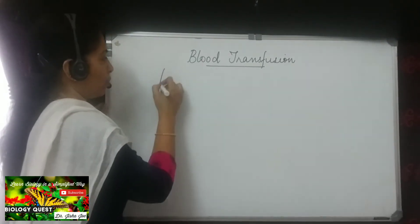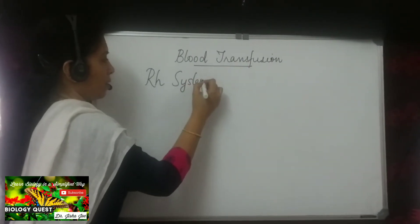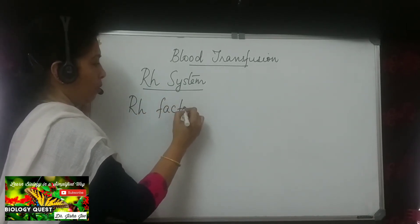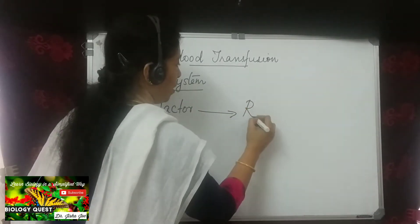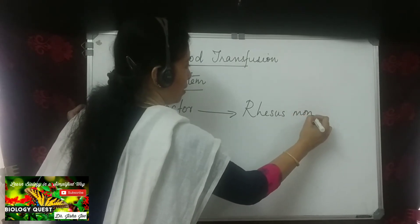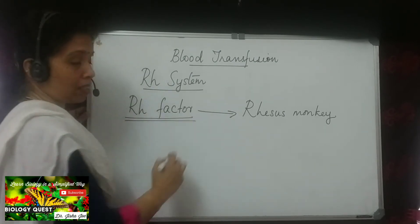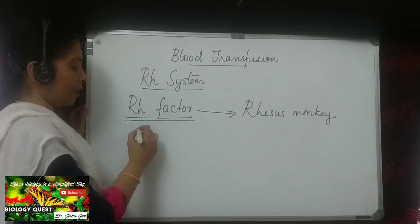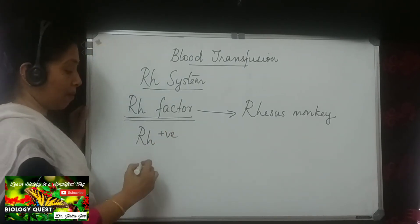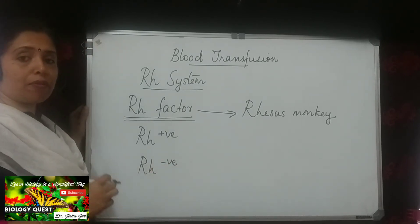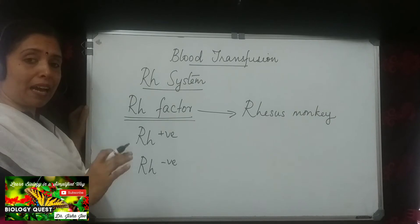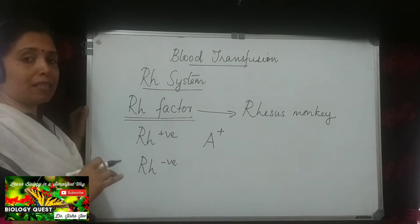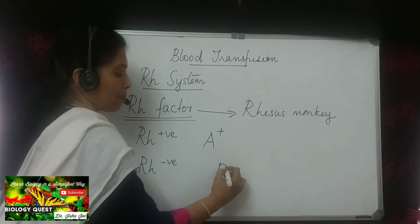Moving on to the second blood grouping system — the RH system. This is based on the presence or absence of the RH factor. The RH factor was first discovered in the Rhesus monkey, which is the common monkey, and that is why the factor gets its name as the Rhesus factor or RH factor. If the RH factor is present, the person is RH positive; if absent, RH negative. For example, a person with blood group A who has the RH factor is A positive, and a B group person without the RH factor is B negative.